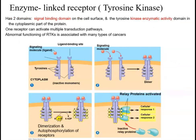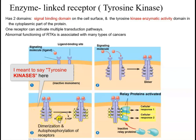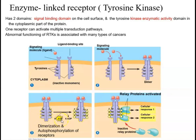Another example of a cell surface receptor is the enzyme-linked receptor, or tyrosine kinase. In this diagram, we have two inactive monomers — each monomer has a ligand-binding domain, which is the extracellular part, and an enzymatic domain that is rich in tyrosines. When the signaling molecule binds to the ligand-binding domains, the two monomers come together to form a dimer — dimerization takes place. This activates autophosphorylation: the enzymatic domain takes ATP, hydrolyzes it, and transfers the phosphate group to a tyrosine in a process called cross-autophosphorylation.